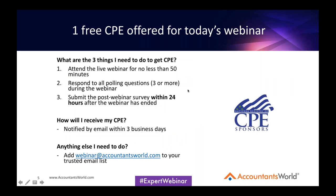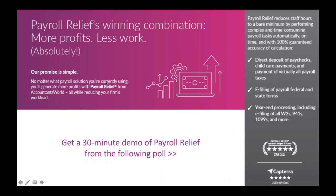We offer one CPE credit for today's webinar. To receive credit, you need to actively participate: respond to all poll questions, complete the survey at the end, and be logged in for a minimum of 50 minutes. CPE certificates will be emailed early next week after your eligibility is confirmed. Also, add webinar@accountantsworld.com to your trusted email list to make sure our emails get through.